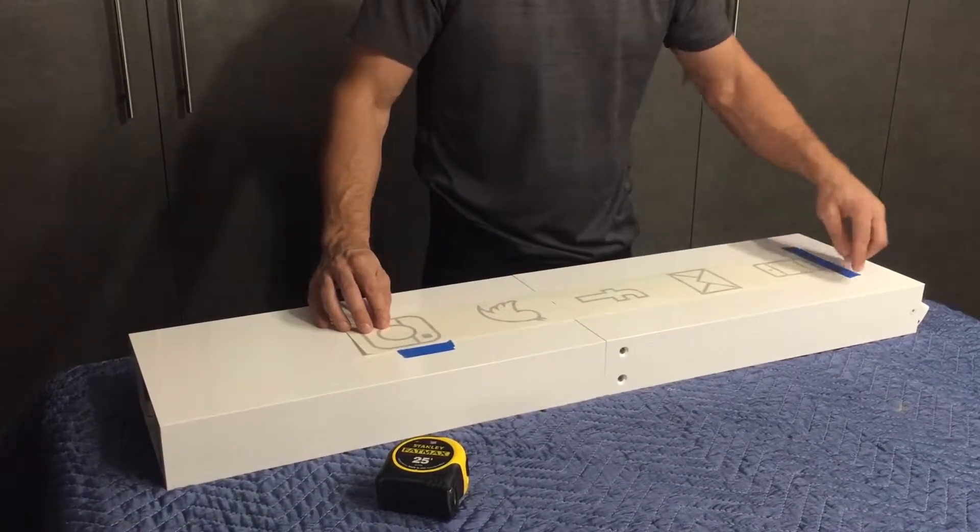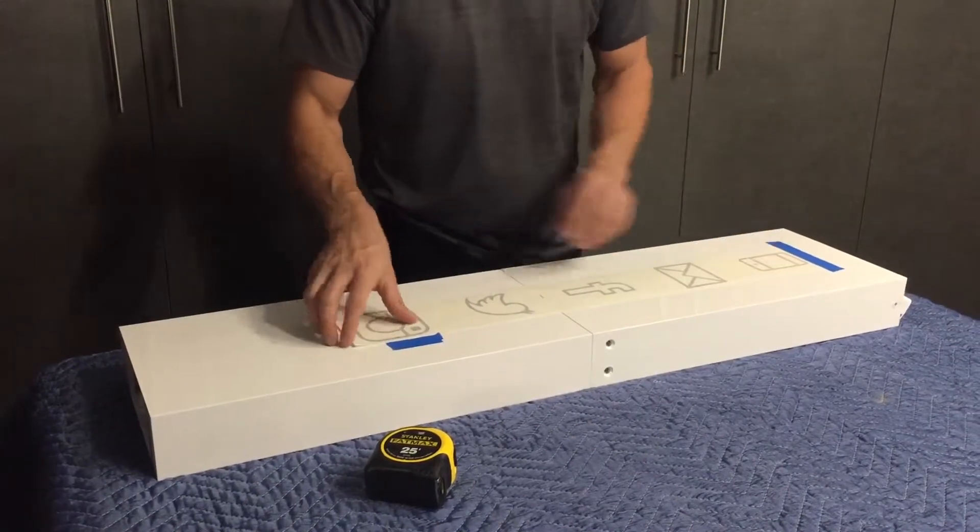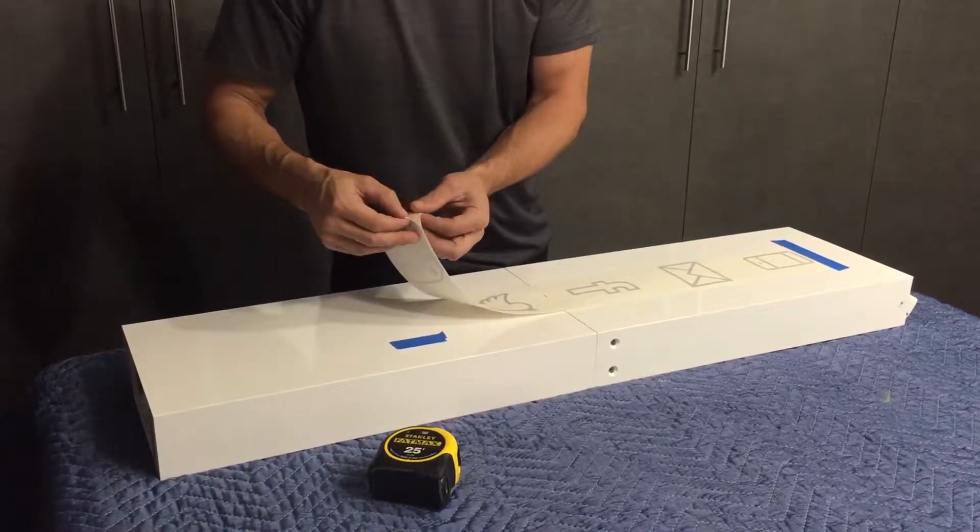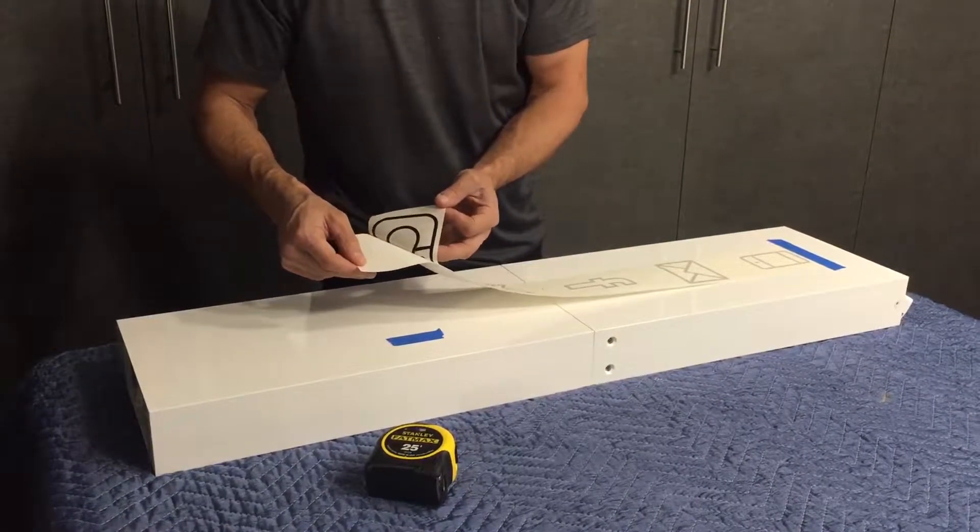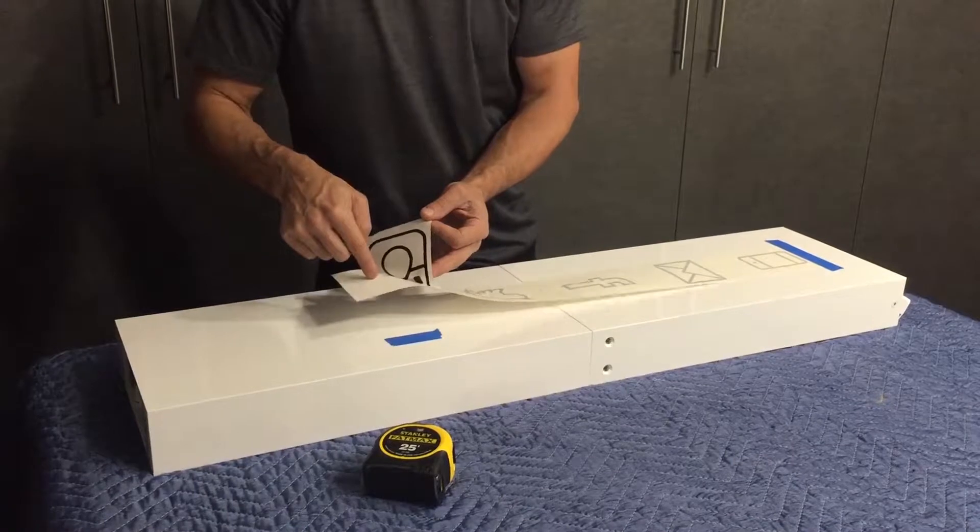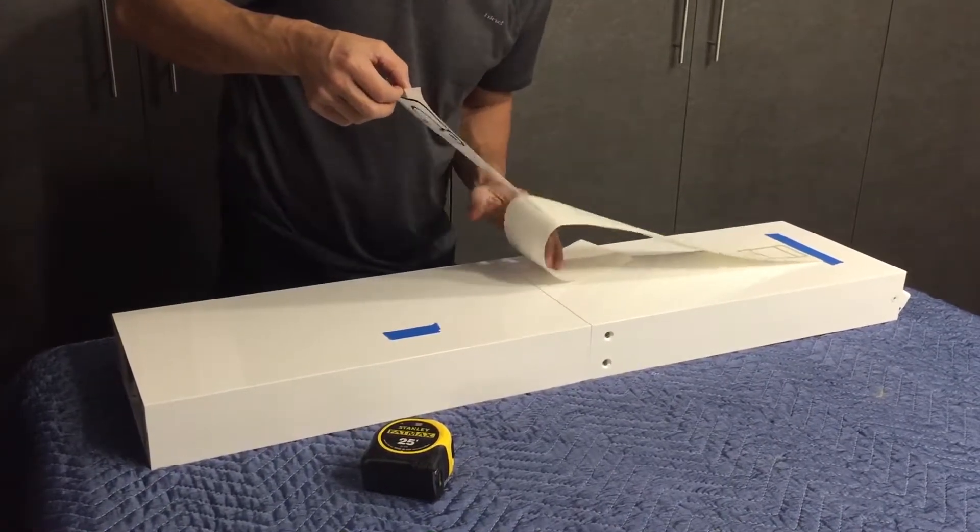At the top we're 3 and 7 eighths from the edge to the edge of the icon. I'm going to peel the masking. Now do this cautiously. You don't want the icon to be left on to the masking here. You're going to peel this up.